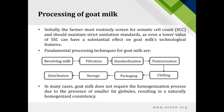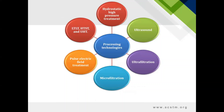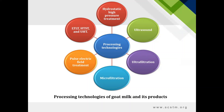Compared to cow milk, goat milk does not require homogenization in many cases due to the presence of smaller fat globules, giving it a naturally homogenized texture. The most advanced processing technologies used for goat milk are hydrostatic high pressure treatment, ultrasound, ultrafiltration, microfiltration, pulse electric field treatment and the three pasteurization methods.